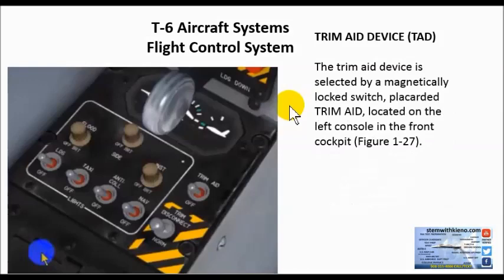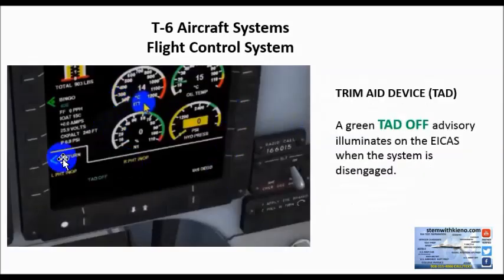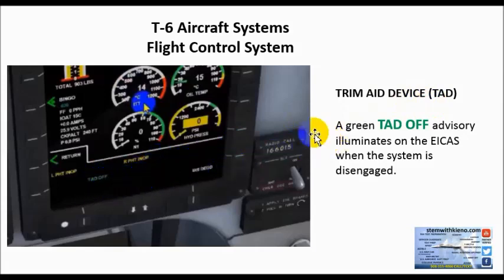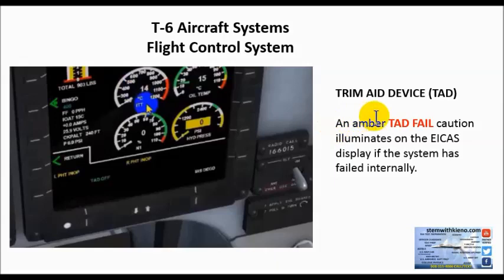The trim aid device is selected by a magnetically locked switch placarded 'TRIM AID' located on the left console of the front cockpit. A green TAD OFF advisory illuminates on the EICAS when the system is disengaged. TAD FAILED caution illuminates on the EICAS display if the system has failed internally. We could take it out of service manually, or if the device fails in flight, you would see TAD FAIL on the enunciator panel.